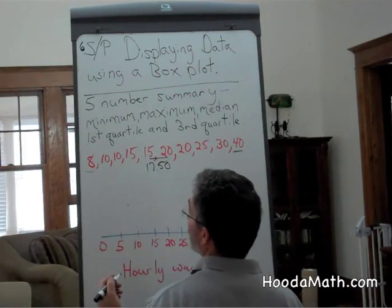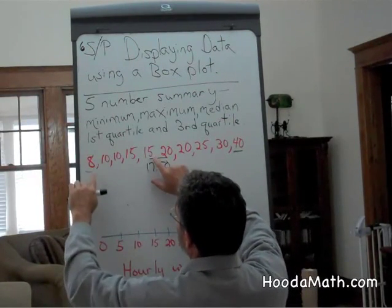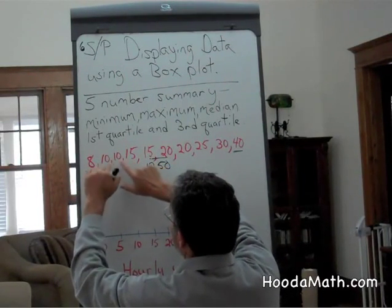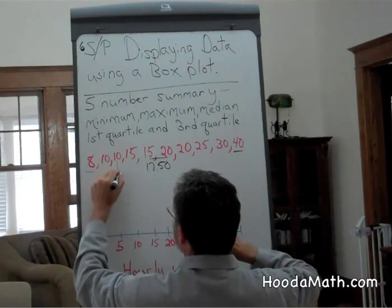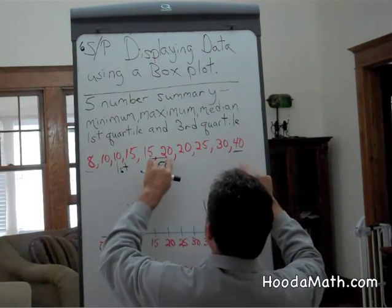To find the first quartile, we find the median of the numbers smaller than $17.50. Start here and count in until we get the middle number. The first quartile is $10.00. The number is above $17.50.